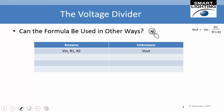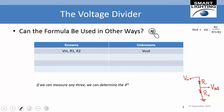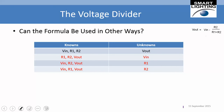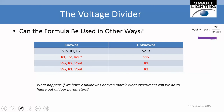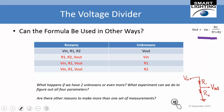The voltage divider formula can be used in other ways. We don't have to use it only in its standard form — we can solve for Vin in terms of Vout, R1, and R2, or solve for R1 in terms of the other parameters. If we have two unknowns or more, we need to make more than one set of measurements.